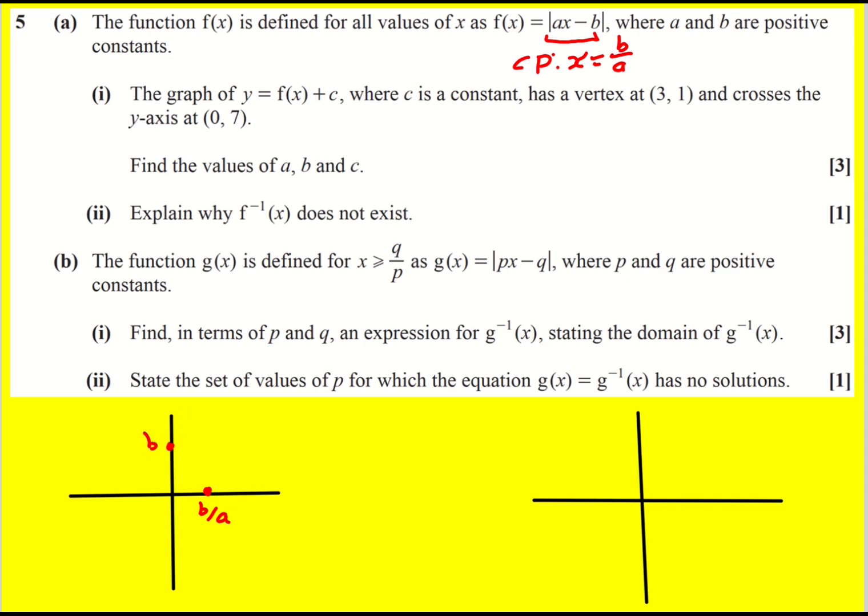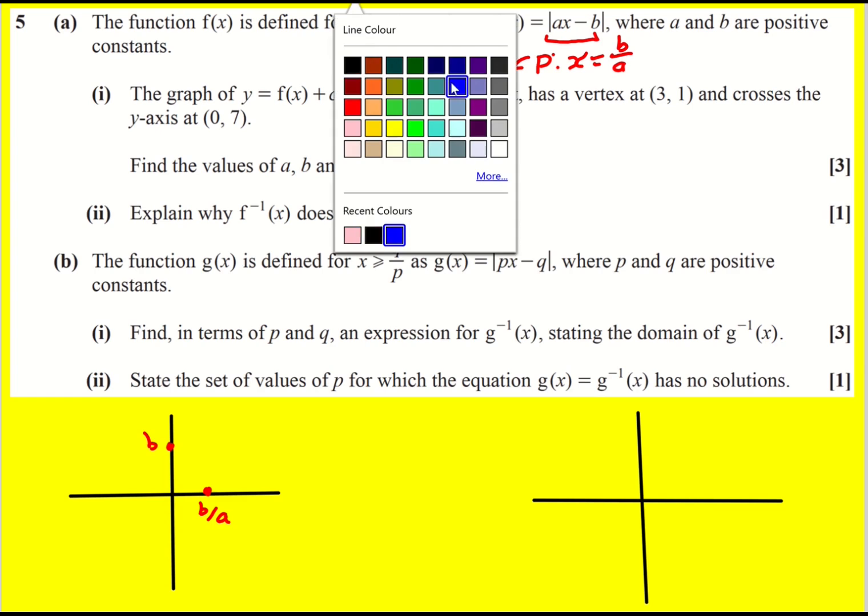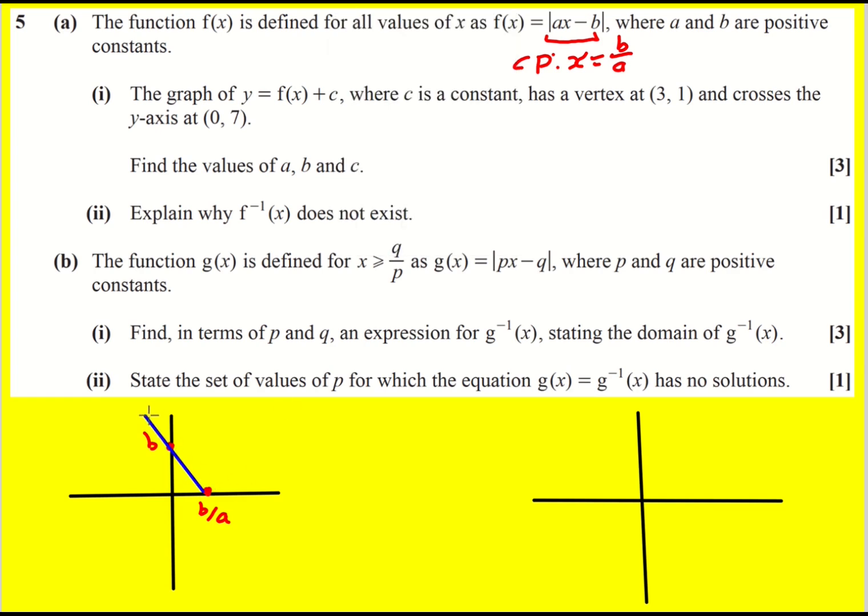I don't really know the relative sizes at the moment but this is a decent sketch. Now I'm going to add c to it. So if c is positive, which it ends up being, it's going to be translated in the y direction. Maybe look a bit like that instead.